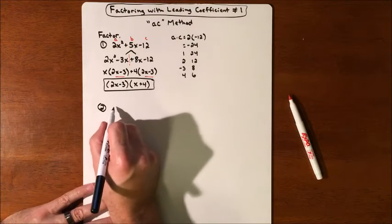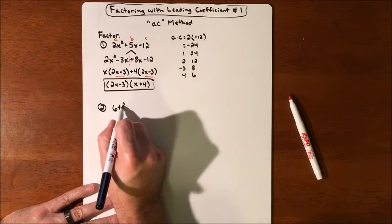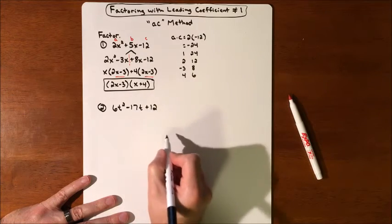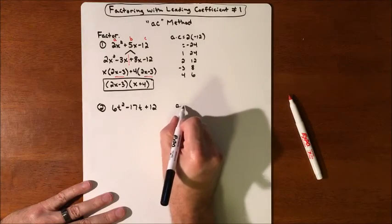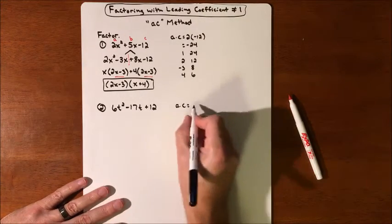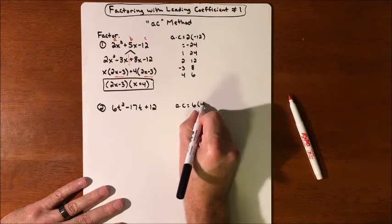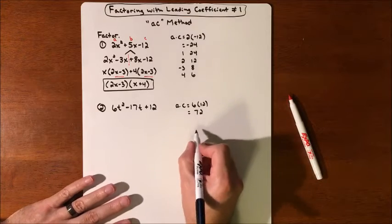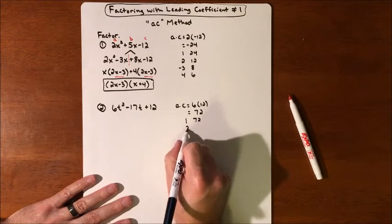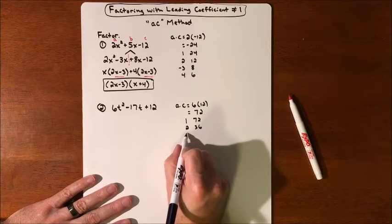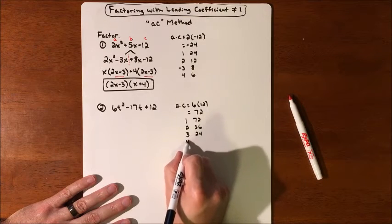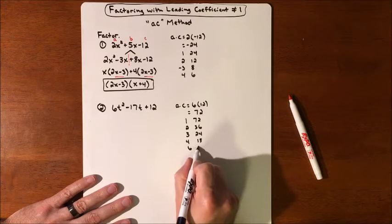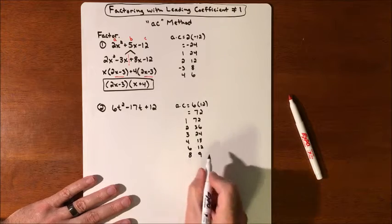Let's try another one. If we have 6t² minus 17t plus 12, our AC is going to be 6 times 12, which is 72. So we need factor pairs of 72: 1 and 72, 2 and 36, 3 and 24, 4 and 18, 6 and 12, 8 and 9.